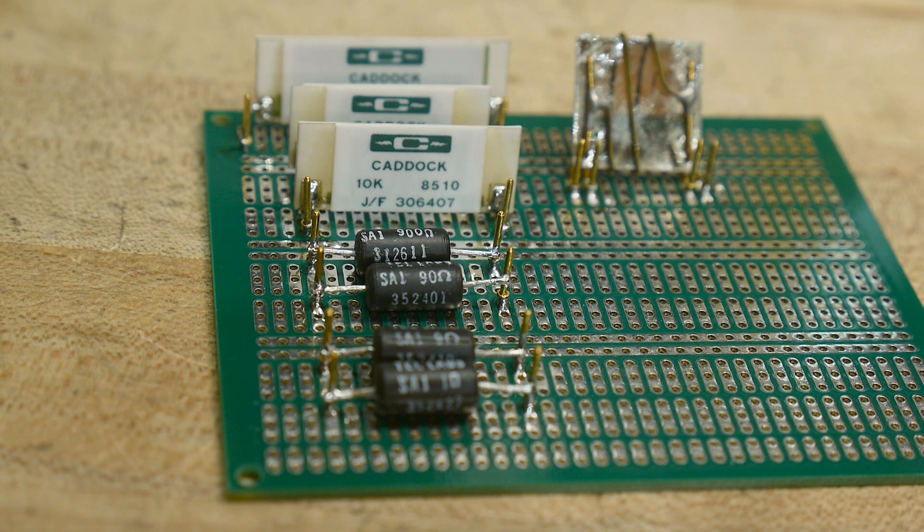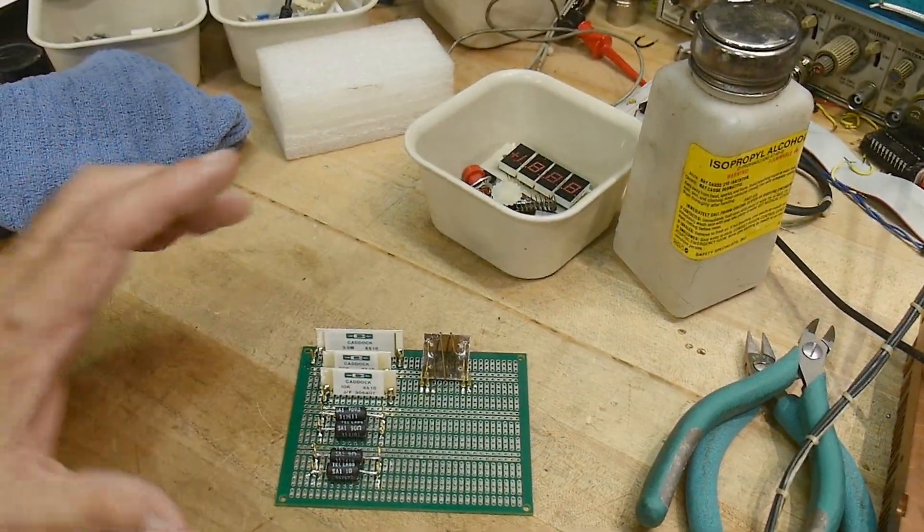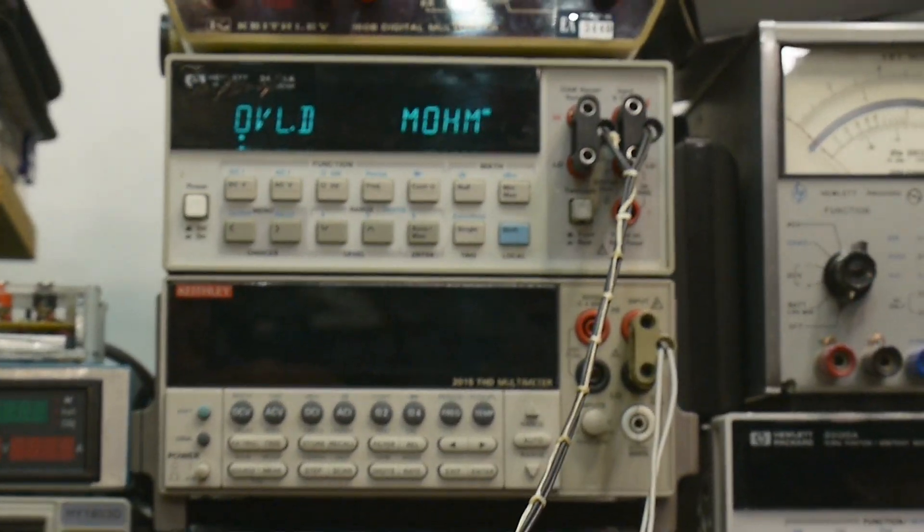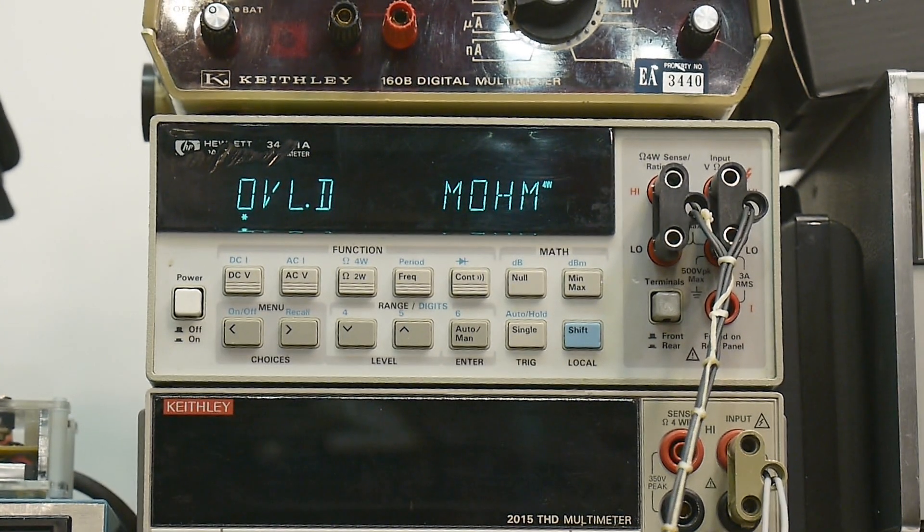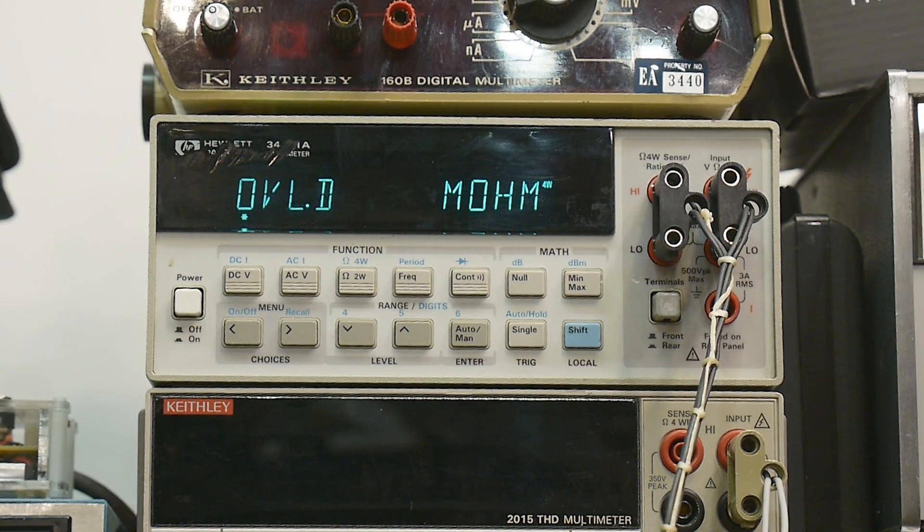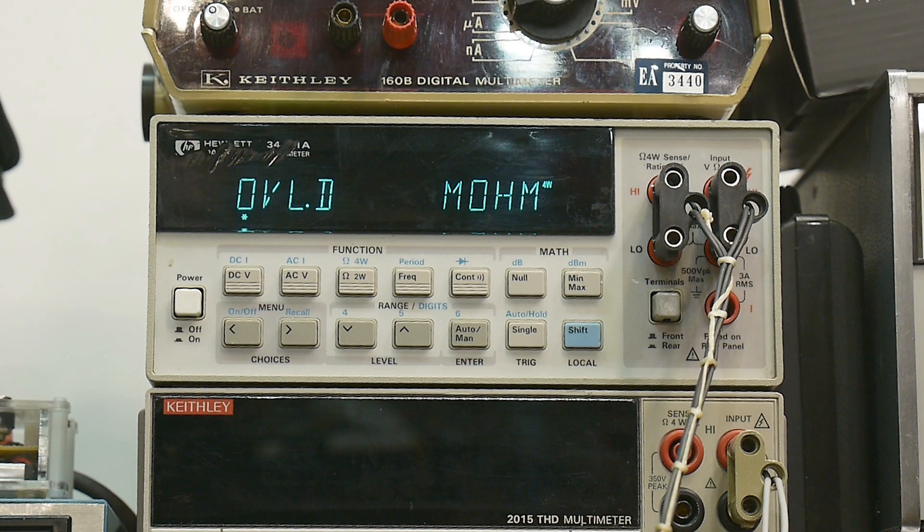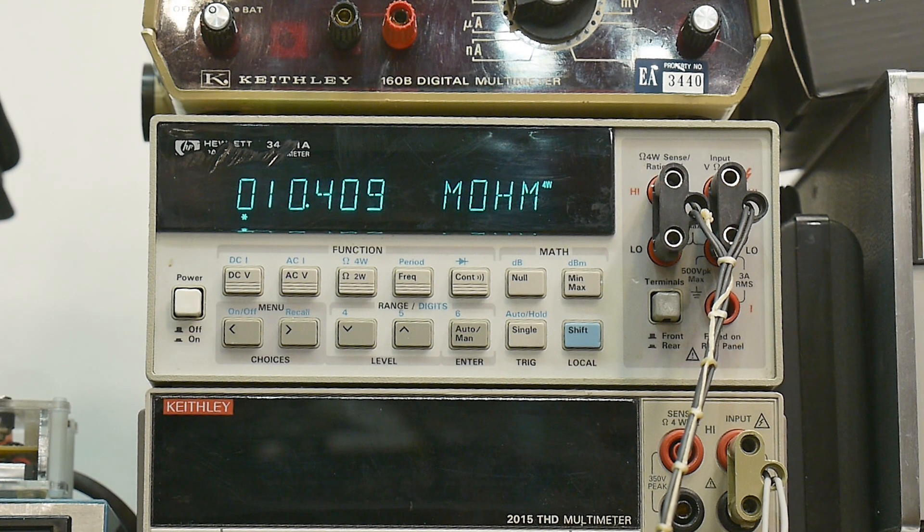I'm going to measure these guys using the meter at the top here, and I'm going to be using my four wire cable so I have Kelvin contacts to everybody. Let's start at the top, this one's supposed to be 9.9 meg.